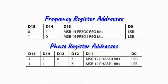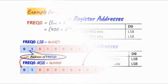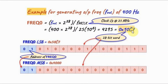These tables summarize the frequency and phase register addresses—frequency register 0, frequency register 1, phase register 0, and phase register 1. Therefore, to write this value into frequency register 0, we send the first 16-bit value first, and then send the second 16-bit value.